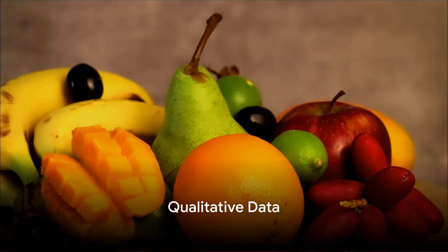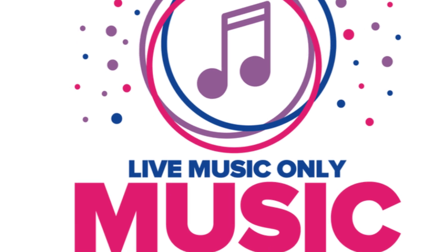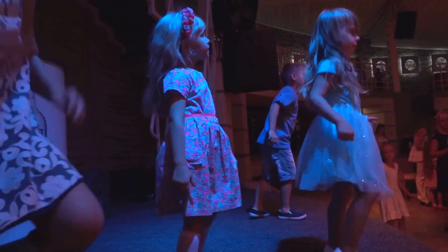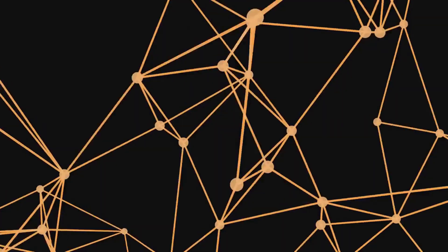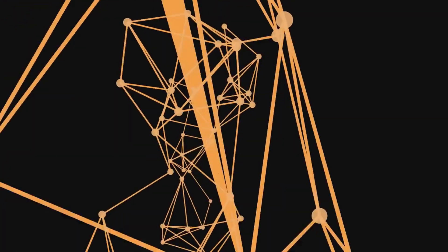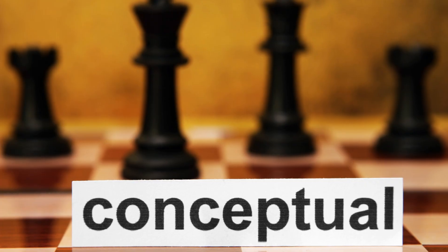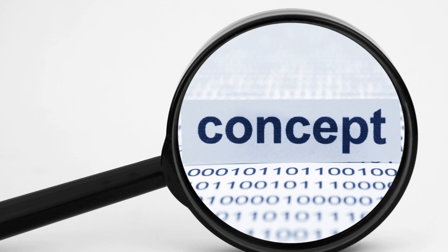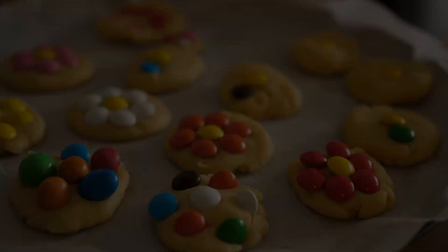Now, on to qualitative data. This type of data is all about descriptions. It's like the color of your favorite shirt, the taste of a delicious meal, or the sound of your favorite song. These things can't be counted or measured in the traditional sense, but they still give us valuable information. Qualitative data help us understand the qualities or characteristics of something, hence the name.